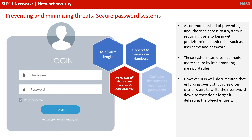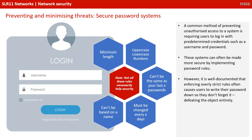A common method of preventing unauthorised access to a system is requiring users to log in with predetermined credentials such as a username or password. These systems can often be made more secure by implementing password rules. However, it is well documented that enforcing overly strict rules often causes users to simply write their password down so they don't forget it, totally defeating the object.